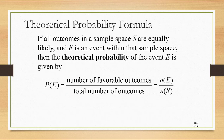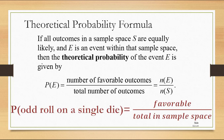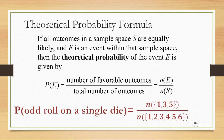Now, if all the outcomes in a sample space are equally likely, as they are in the example of rolling a six-sided die, and if E is an event in that sample space like rolling an odd number, then the theoretical probability of that event is the number of favorable outcomes divided by the total number of outcomes. So for example, the probability of rolling an odd number on a single die — we need to think about the favorable outcomes where we have an odd, and the total possibilities in the sample space — the number of ways to get a 1, a 3, or a 5 out of the set 1, 2, 3, 4, 5, 6. That's going to be 3 over 6, which we can reduce to one-half. So the probability of an odd roll on a single die is one-half.